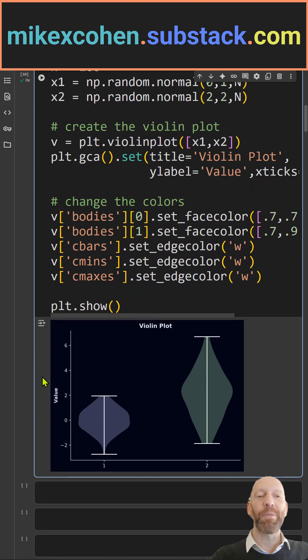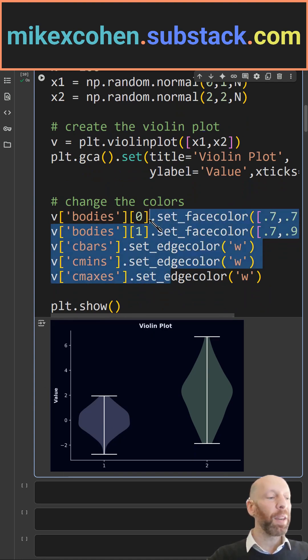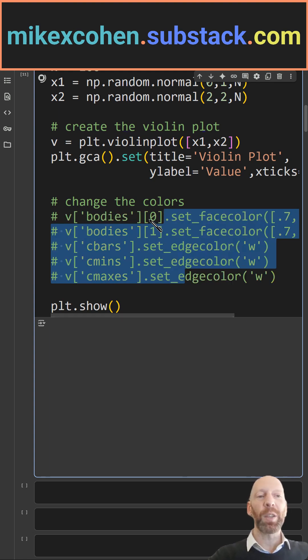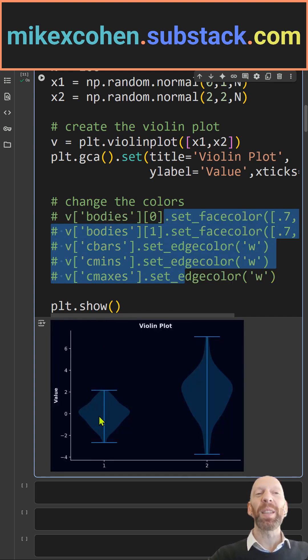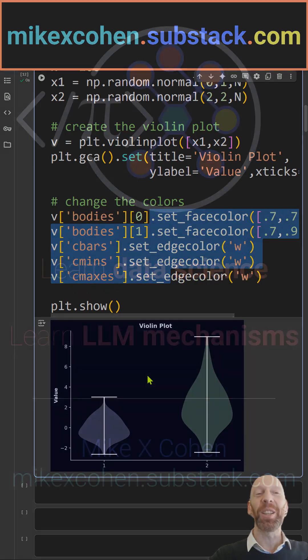I have a title, I have a y-axis label. All of this code here is just about the visualization. You can see this is the default color setting that's done by Matplotlib, and I think these colors look a little bit nicer.